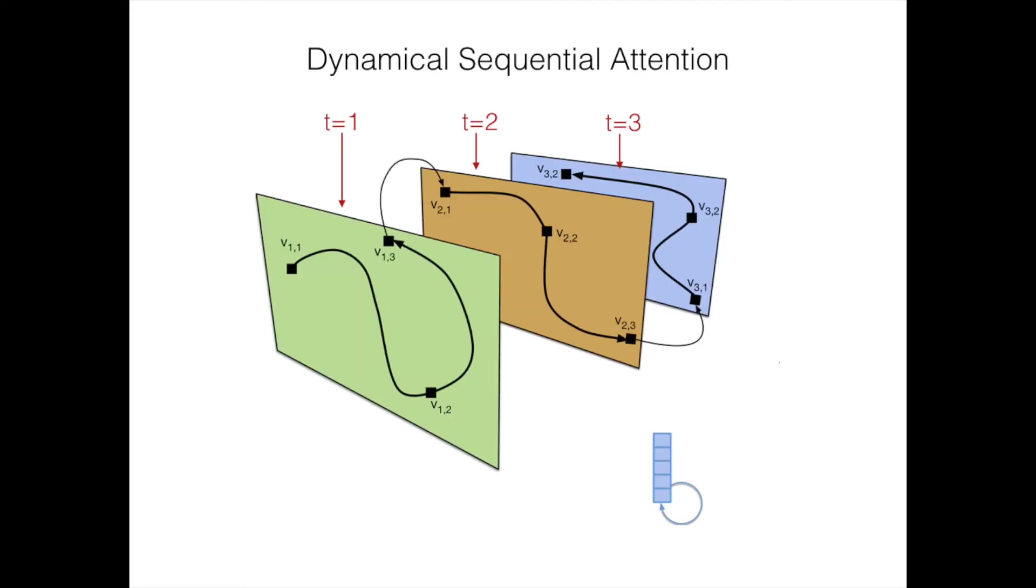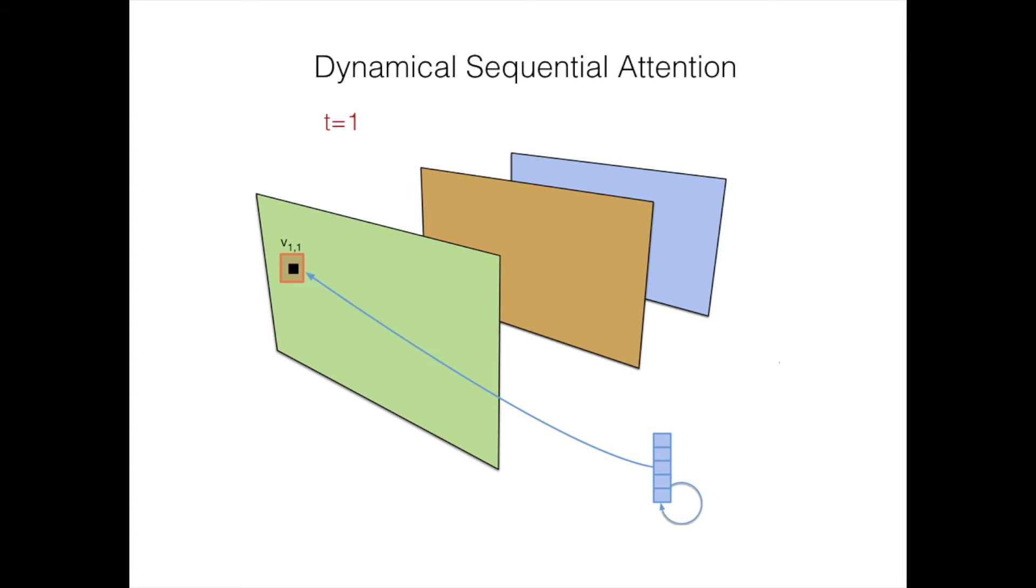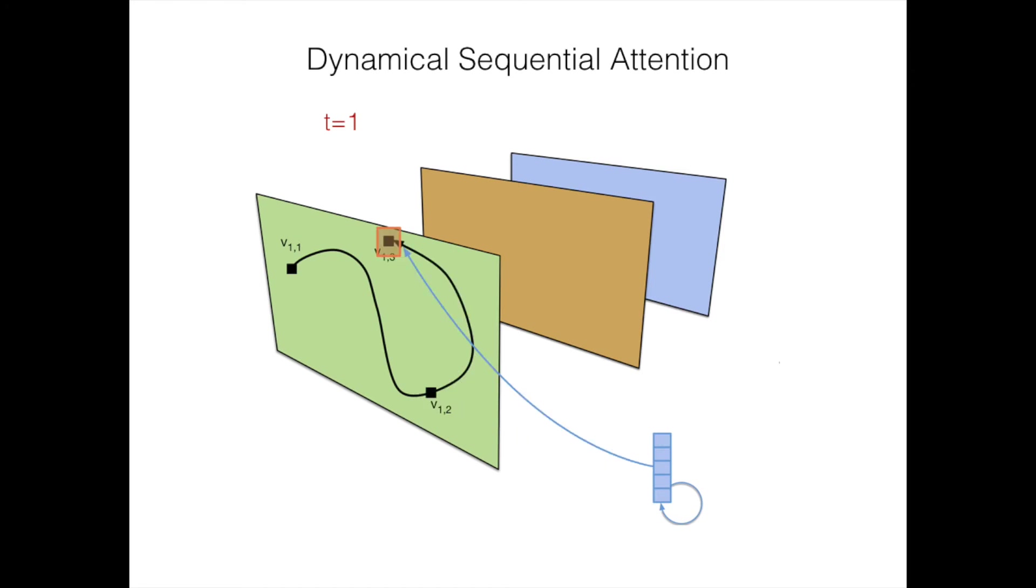First, a sequential attention model extracts glimpses from the most interesting areas of each frame. The sequential process produces several glimpses for each frame, continuing over multiple frames. It does not start from scratch at each time step.